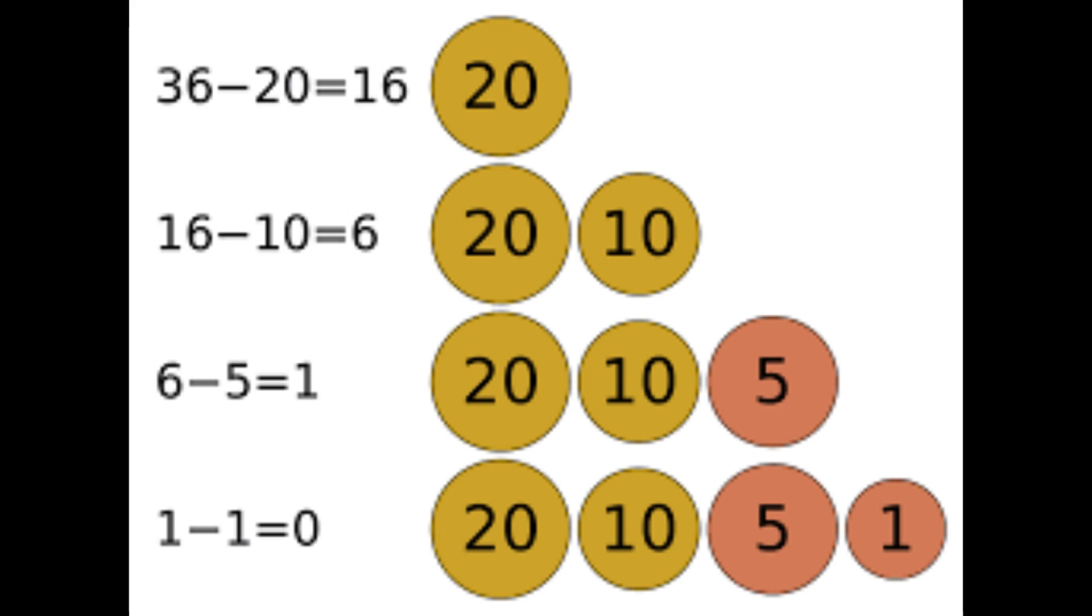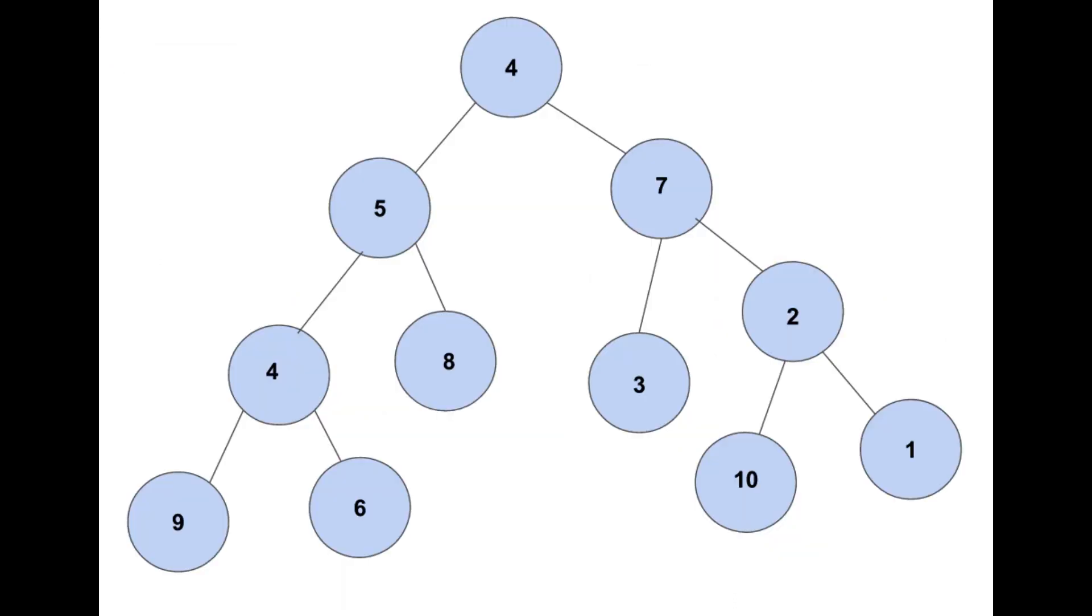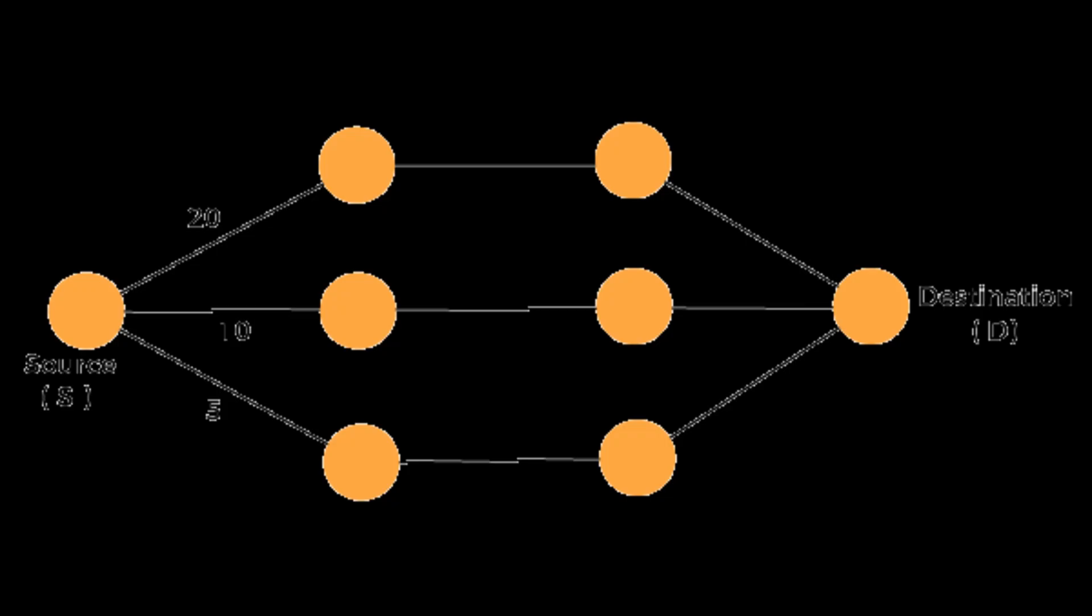A greedy algorithm is a type of algorithmic strategy used in computer science and mathematics to solve optimization problems. The main characteristic of a greedy algorithm is that it makes locally optimal choices at each step with the hope of finding a globally optimal solution.